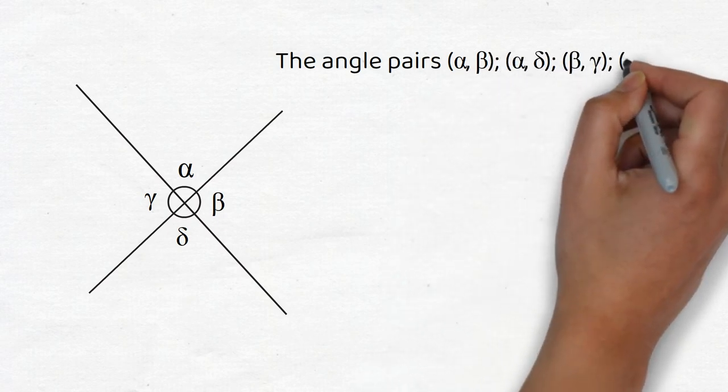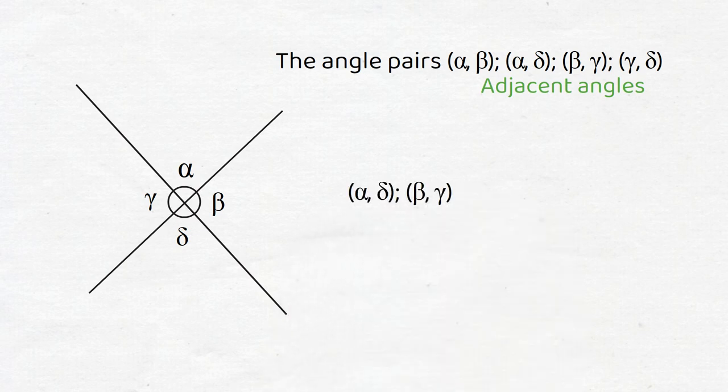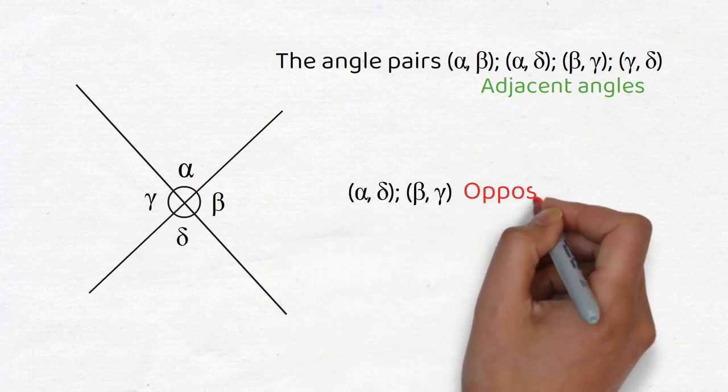and delta. The angle pairs (α, β), (α, δ), (β, γ), (γ, δ) are called adjacent angles, while the angle pairs (α, δ) and (β, γ) are called opposite angles.